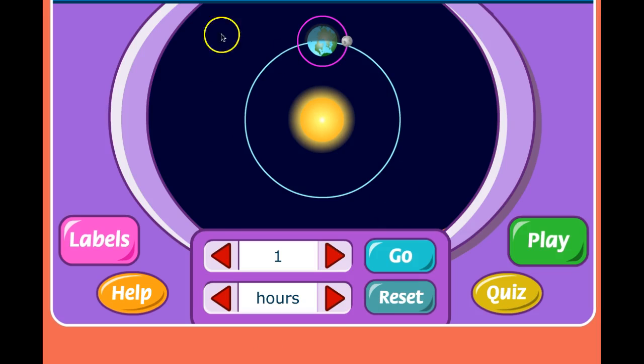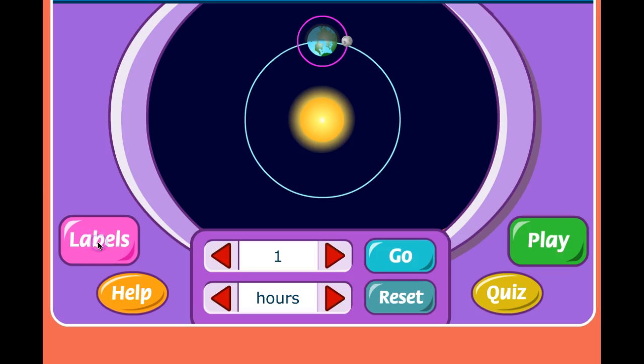When the learning tool opens up, this is the screen that you'll see. And over here, there's a button called Labels. Watch what happens when I click on Labels. We're looking down on the sun, the earth, and the moon.